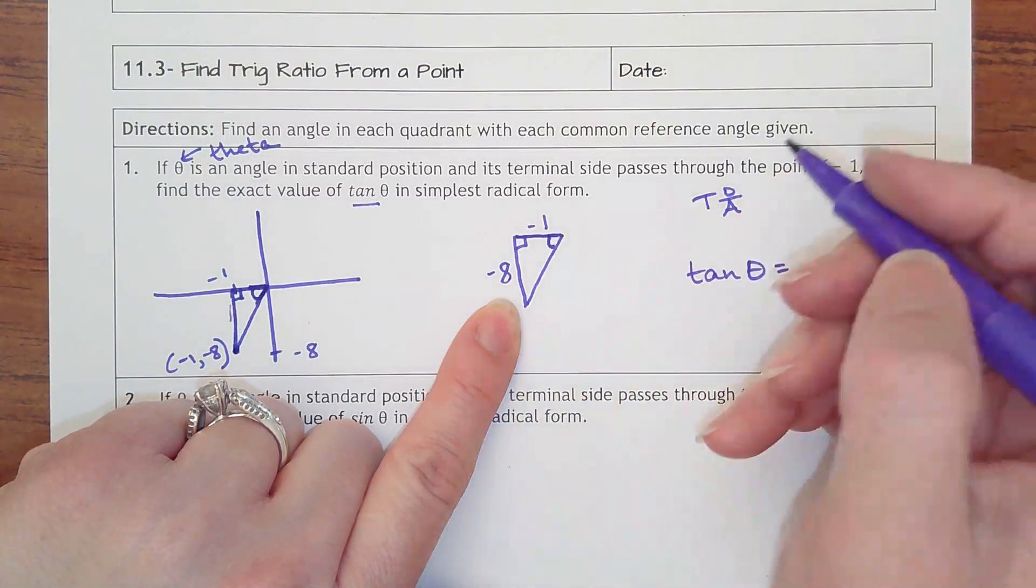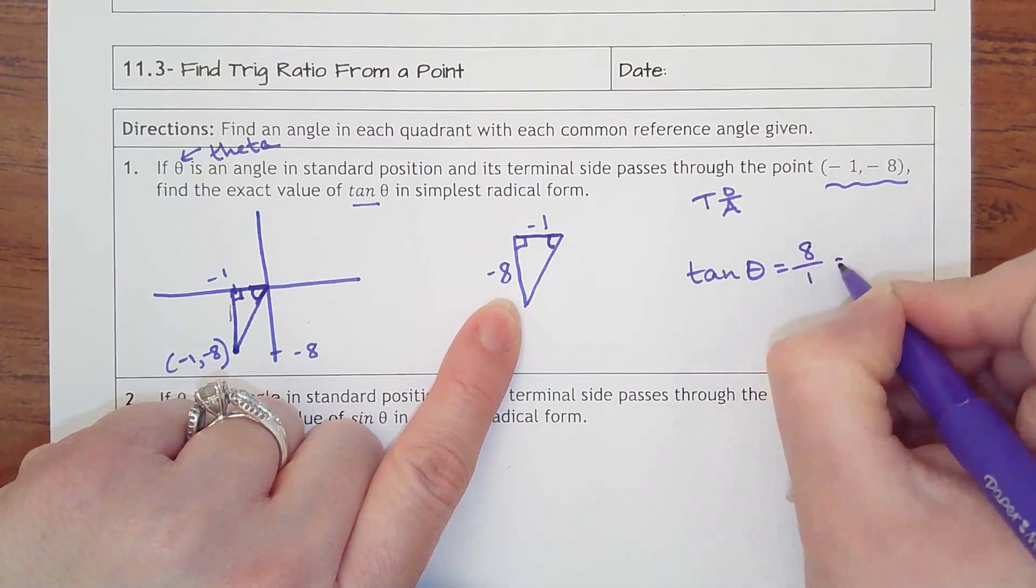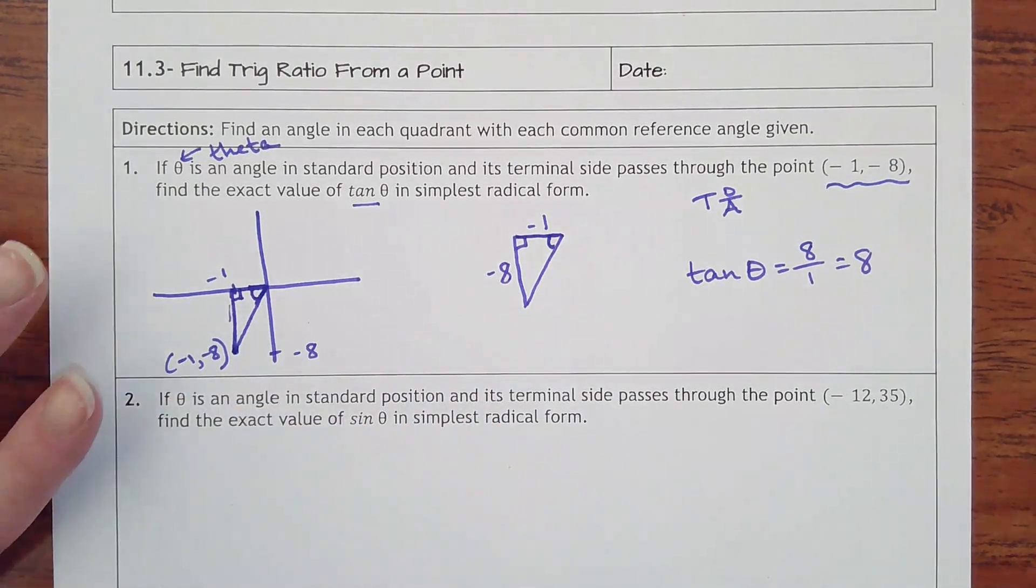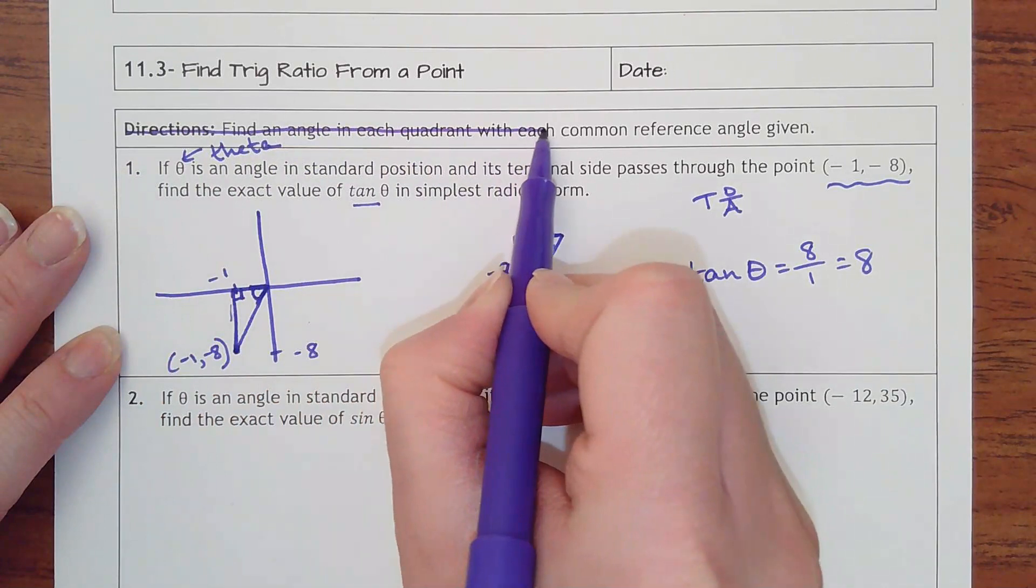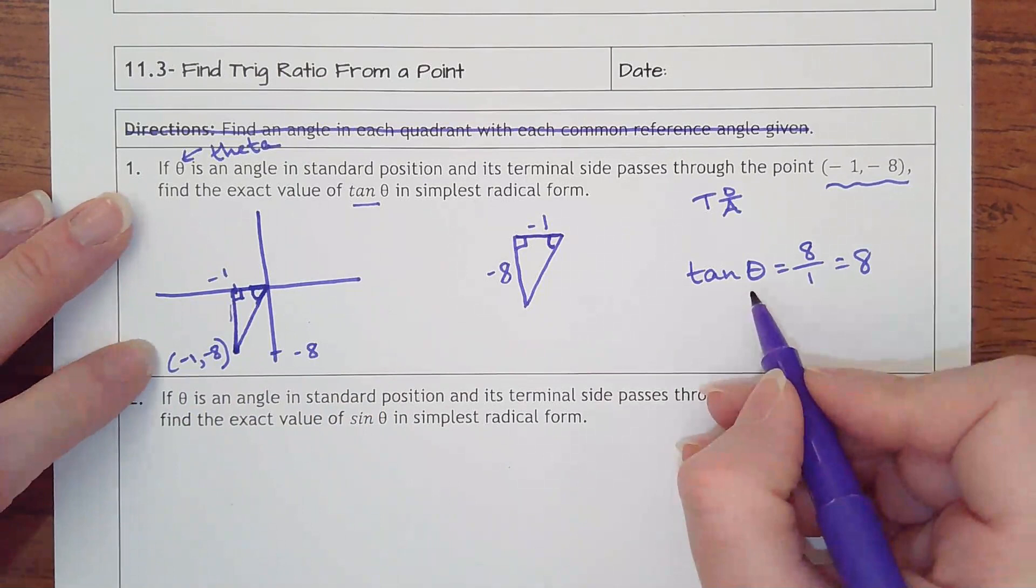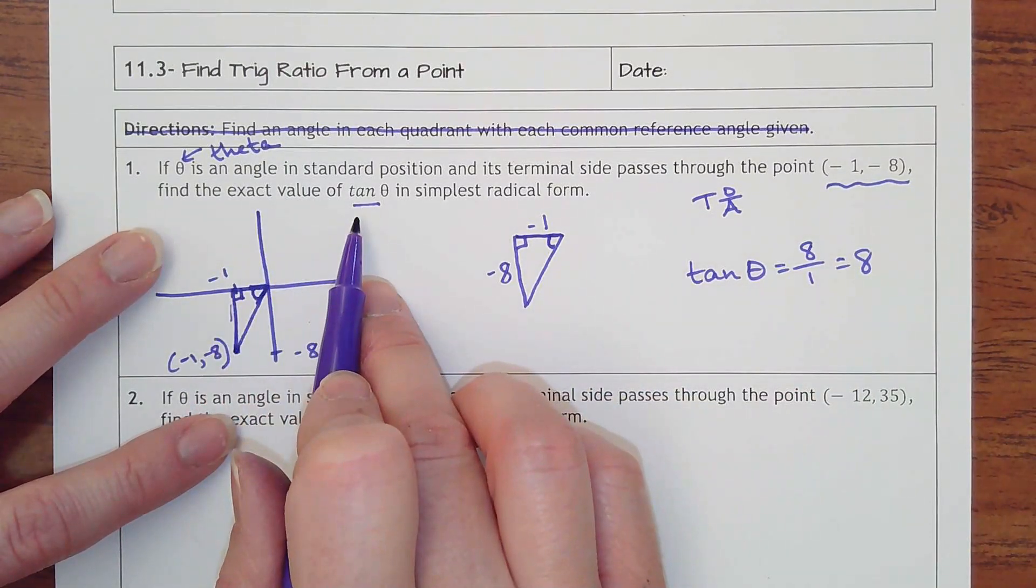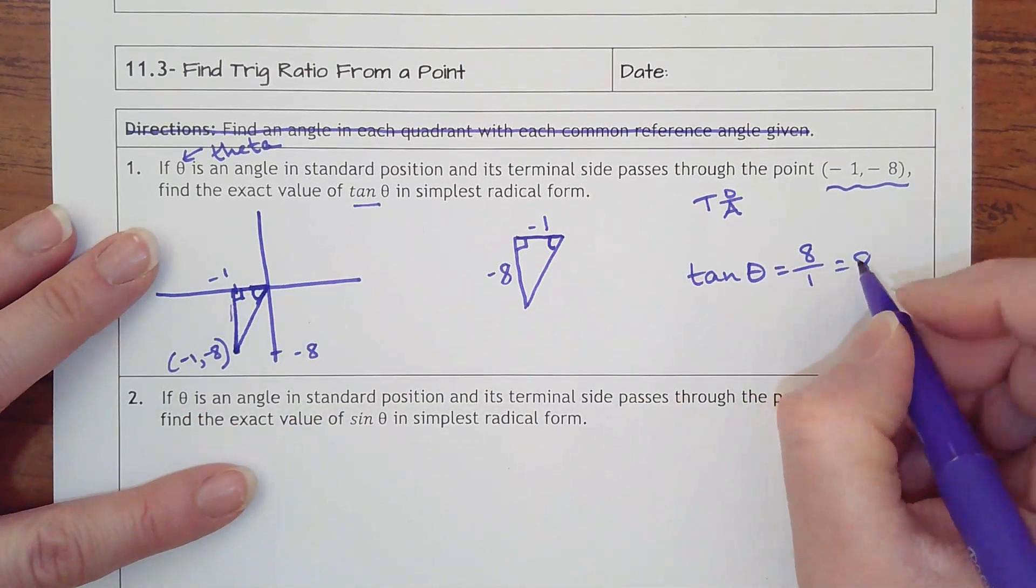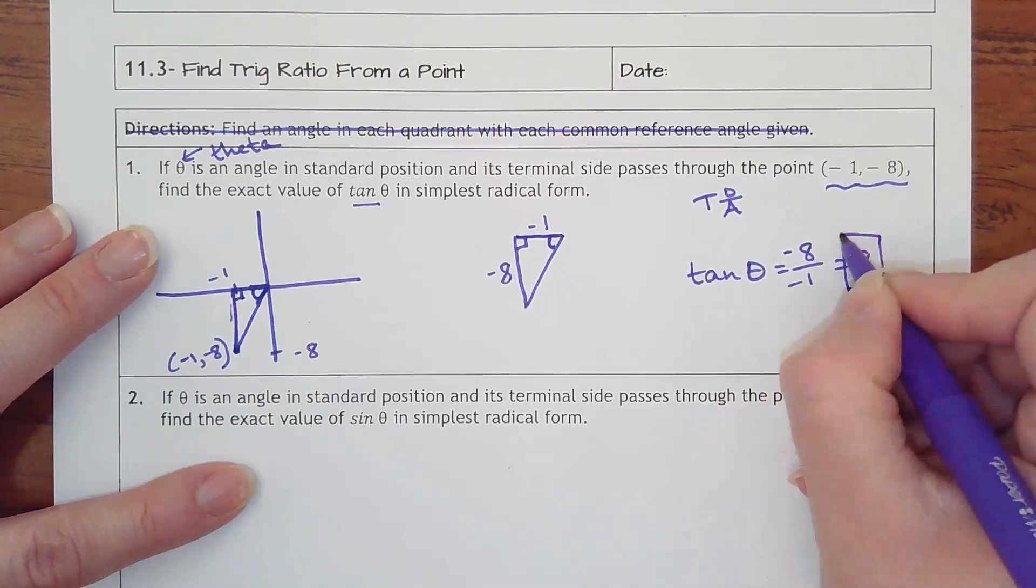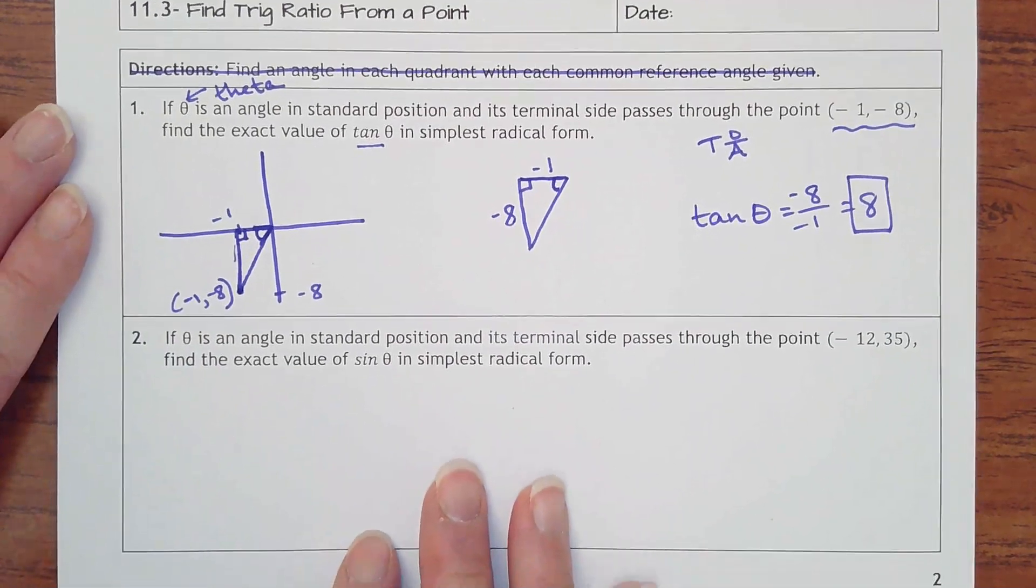...is -8 over -1, which is 8. Sorry, the directions confused me. We have what we need to find. We're not finding the angle because we would have to do inverse tan. We're simply finding the exact value, so that means the ratio of the sides. So all we need to do is have this -8 over -1, which is 8.